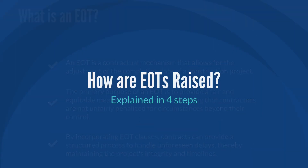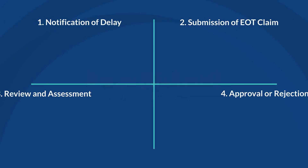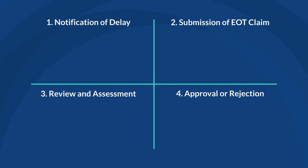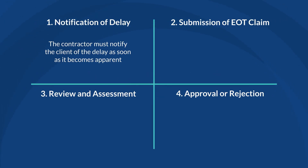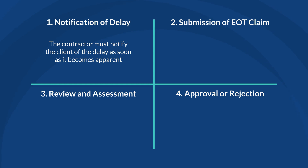So, how are EOTs raised? Raising an EOT involves several steps, as outlined in your contract. Here is a general process. Number 1: Notification of Delay. The contractor must notify the client or project manager of a delay as soon as it becomes apparent. This notification should include details about the nature and cause of the delay.